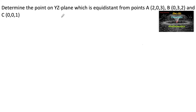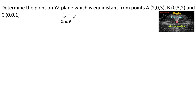Determine the point on the YZ-plane which is equidistant from points A(2, 0, 3), B(0, 3, 2), and C(0, 0, 1). We know that any point on the YZ-plane will have its x-coordinate equal to 0.